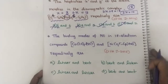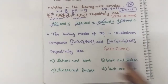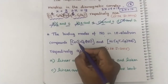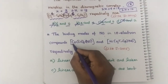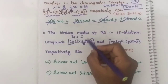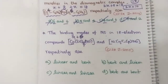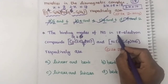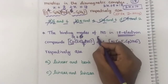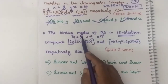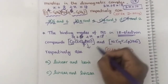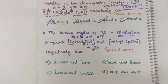Now the binding modes of NO in 18-electron compounds — it is obeying the 18-electron rule. Cobalt will have 9 valence electrons. It has three carbonyls, which donate 6 electrons. 9 + 6 = 15 electrons. The question states it obeys 18 electrons, so the total should be 18. Therefore NO must donate 3 electrons: 15 + 3 = 18. If it donates 3 electrons, it will be linear in structure. If it donates 1 electron, it is bent.